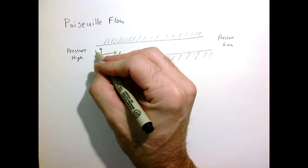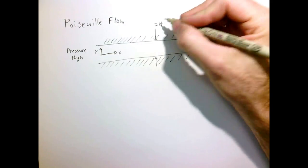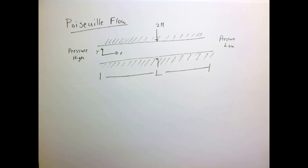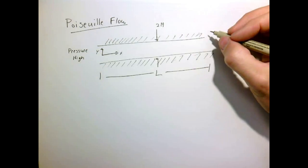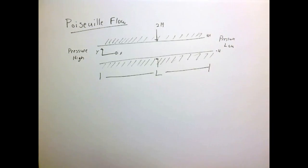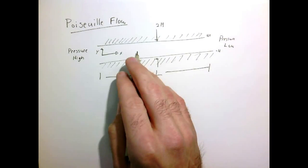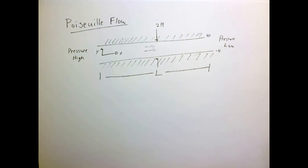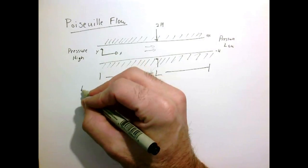Let's consider the following problem known as Poiseuille flow. We have two parallel plates — high pressure on the left, low pressure on the right — with an XY coordinate system. We're considering two dimensions. The height of the channel is 2h, going from plus h to minus h, and the length of the channel is L. There's a fluid inside this gap and we're driving flow from left to right. We want to find the velocity field.